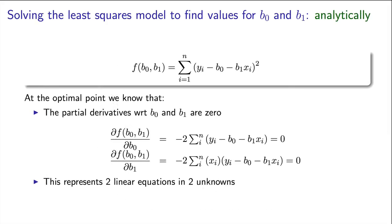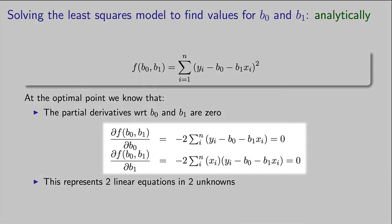So what we do then is take the partial derivative of f with respect to b0 and the partial derivative with respect to b1, and we set those equal to zero. You can readily show that you get these summation equations.